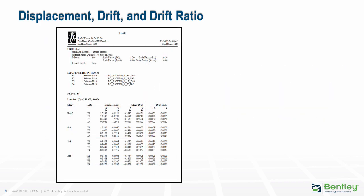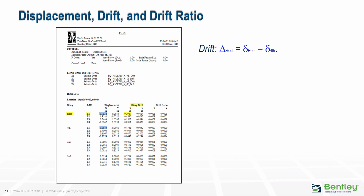Using the output from RamFrame, part of the Ram Structural System, as an example, here is a printout of the story displacements and drifts. At each level and for each load case, the lateral displacement is listed. In this case, displacement for this seismic load case is 1.75 inches. The story drift is obtained by subtracting the displacement of the level below; in this case the story drift at the roof is 1.75 minus 1.35, or 1.40 inches. The drift ratio is obtained by dividing the story drift by the story height — 162 inches — so the drift ratio is 0.0025.